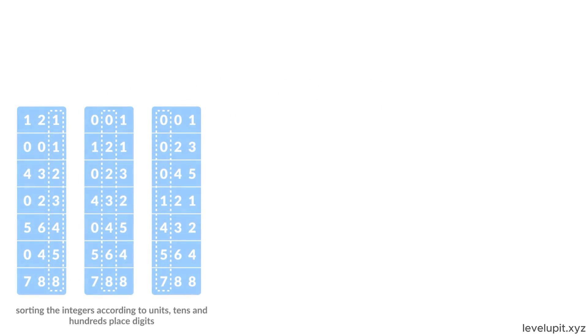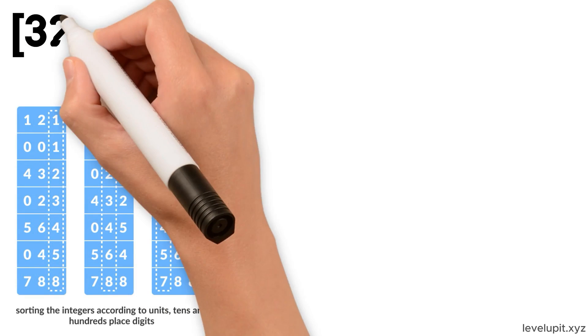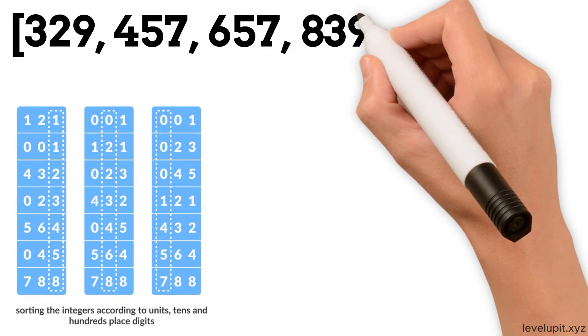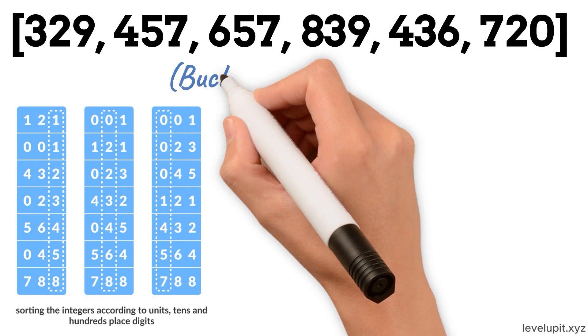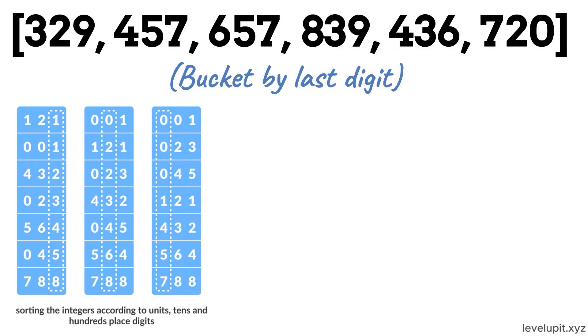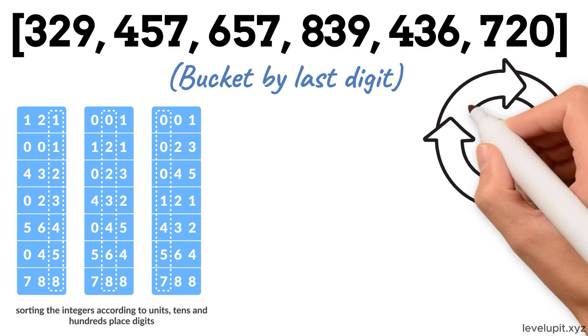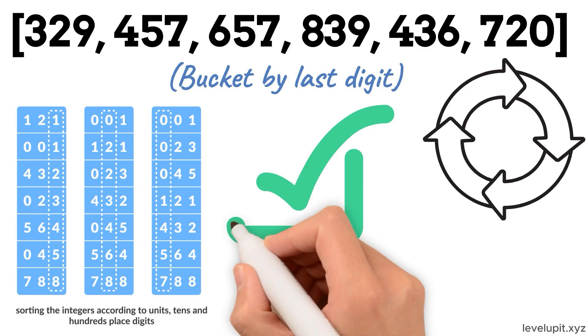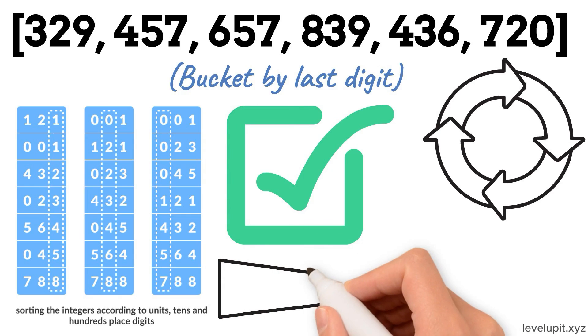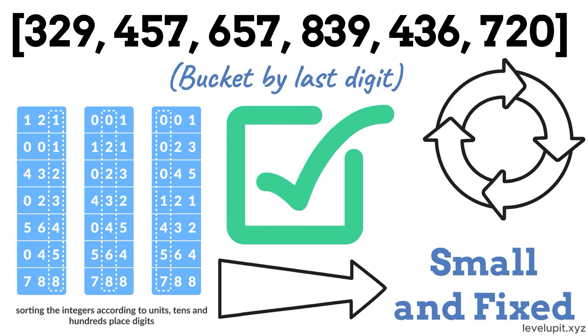Radix sort sorts integers by digits. Imagine sorting by one's place first, bucket by last digit, keeping order within buckets. After the one's place, sort again by the ten's place, then hundreds. Because each pass preserves the order from the previous pass—stability—after a few passes, the list becomes fully sorted. This is powerful when the number of digits is small and fixed.